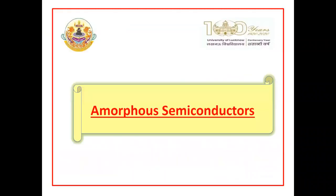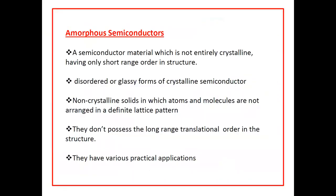Amorphous Semiconductors are semiconducting materials which are not entirely crystalline. They have only short range order in their structure — in other words, they are a disordered or glassy form of crystalline semiconductor.